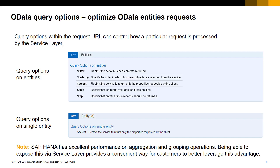Please note that SAP HANA has excellent performance on aggregation and grouping operations. Being able to expose this via service layer provides a convenient way for customers to better leverage this advantage. I just want to emphasize that service layer performance can be improved by using query options.